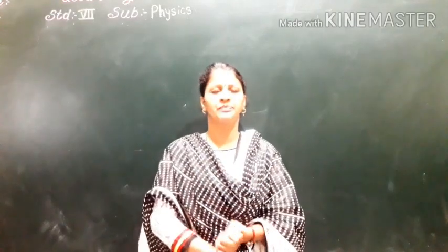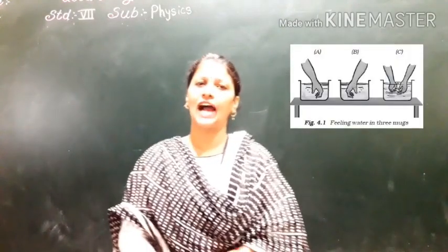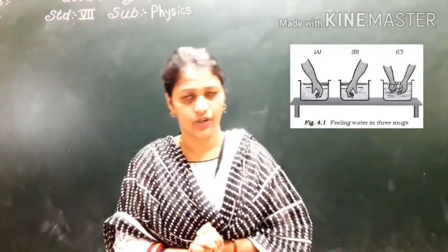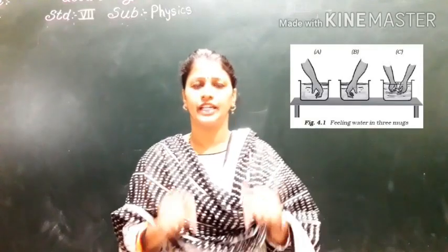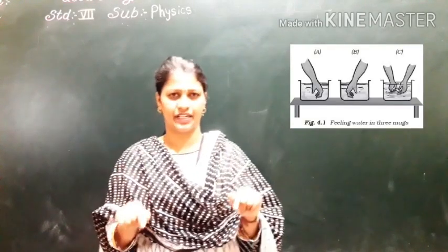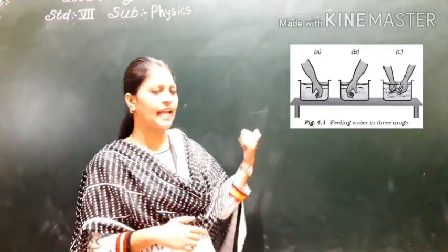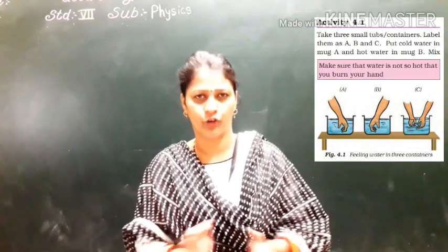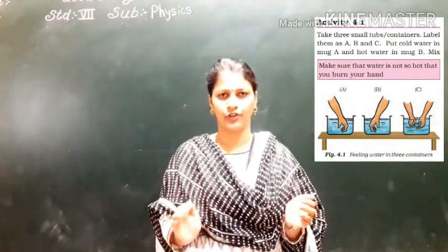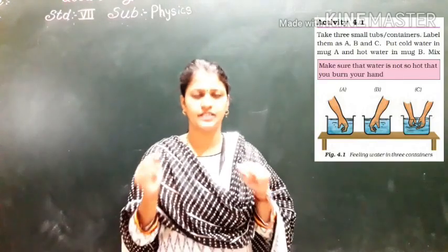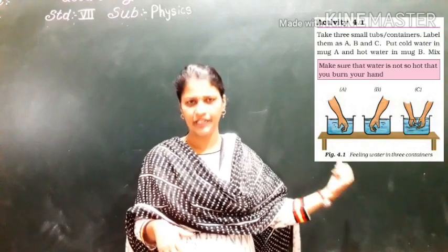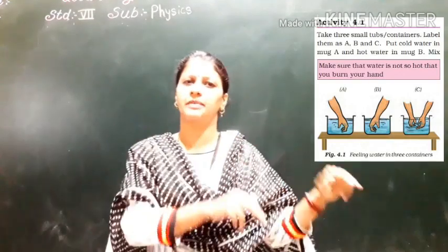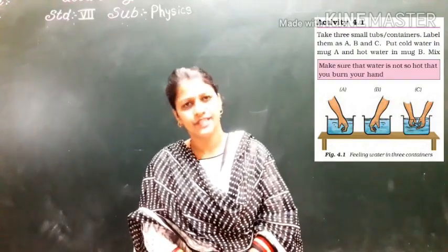There are three bowls. In bowl A, take hot water. In bowl B, take ice water. First, dip your hand in both A and B — where A is hot and B is cold. In bowl C, take warm water. After two or three minutes, remove your hand from A and B and dip it into the warm water in container C.